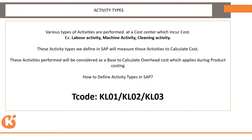Examples of activity types include labor activity, machine and cleaning activities, setup activities, et cetera. These activity types we define will be used to measure those activities and calculate the cost of a product that we manufacture. So these activities performed will be considered as a base to calculate the overhead cost, which we generally apply during the product costing activity.